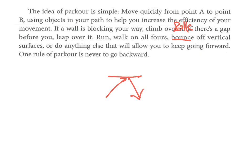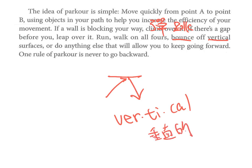bounce这个字是跳的意思，特别指弹跳，遇到某个东西你弹回来。bounce off vertical，vertical切一下音节，vertical这个单字的意思是垂直的，弹跳在垂直的surface表面，surface就是表面。